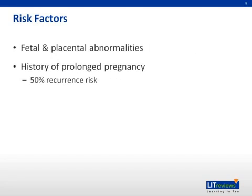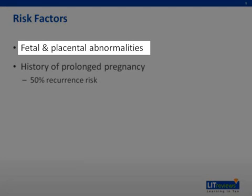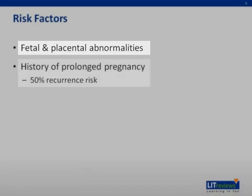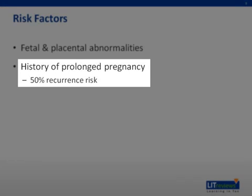So who is at risk? Although the exact triggers for initiation of labor have not been completely described, there are certain fetal and placental abnormalities such as anencephaly, placental sulfatase deficiency, and fetal adrenal hypoplasia that have been associated with an increased risk of prolonged pregnancy. Since there is up to a 50% recurrence risk in mothers who previously had a prolonged pregnancy, a genetic predisposition for this condition is evident.